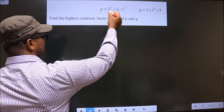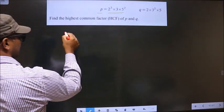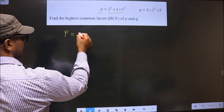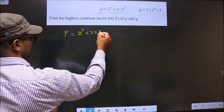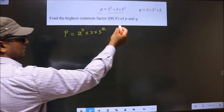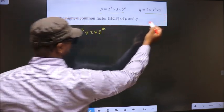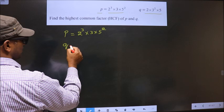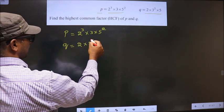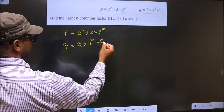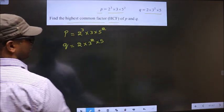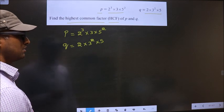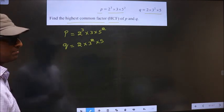P equals 2 cubed times 3 times 5 squared. Q equals 2 times 3 squared times 5. Find the highest common factor, that is HCF, of P and Q. So we should find HCF of P and Q.